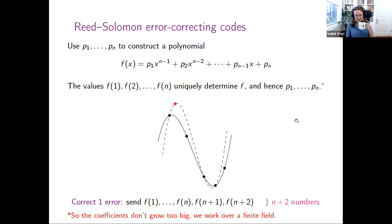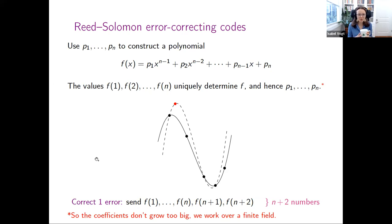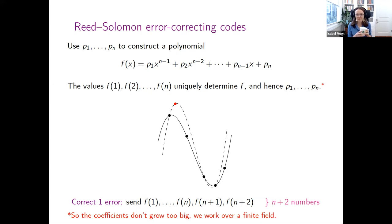One technical point: you don't want the values of the polynomial to be astronomically larger than the coefficients. To keep things bounded, you actually have to work over finite fields — that's why Reed and Solomon's paper was titled 'Polynomial Codes over Certain Finite Fields.'